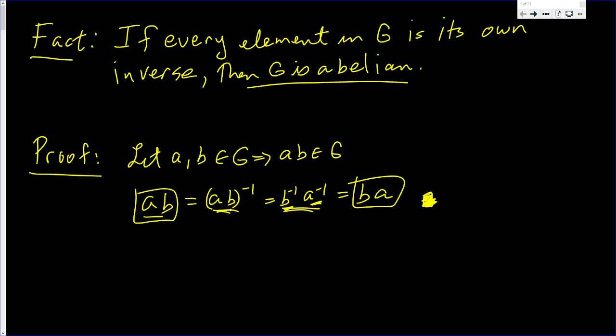Every element in the group G is its own inverse, then the group G is an abelian group. Just remember to show that it's abelian, you want to show that for any A, B in G that AB is equal to BA.